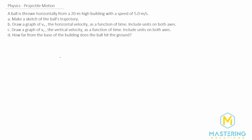Let's draw the picture for part A first. We'll say that this is the ball, and initially the velocity is straight horizontal at 5 meters per second. The height of the building is 20 meters, so up here at the top this is y equals 0, and then down here the delta y is 20 meters, so y will equal negative 20 meters. So the delta y will be negative 20.